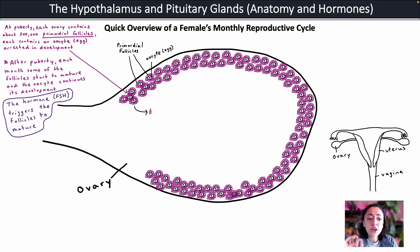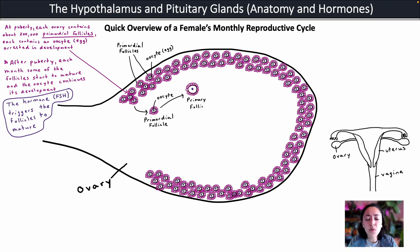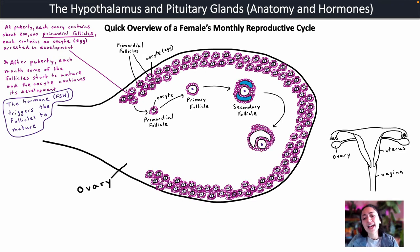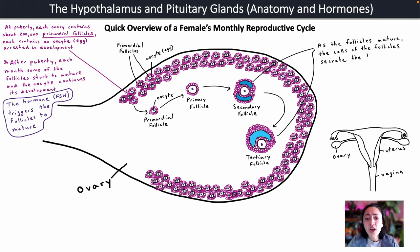FSH triggers a cohort of primordial follicles to start maturing. The follicle cells divide and grow, the oocyte continues development, and the primordial follicle becomes a primary follicle, then a secondary follicle, and then a tertiary follicle. Inside these follicles, fluid also starts to build up. As the follicles mature, the surrounding cells start to secrete the hormone estradiol, which is a type of estrogen.